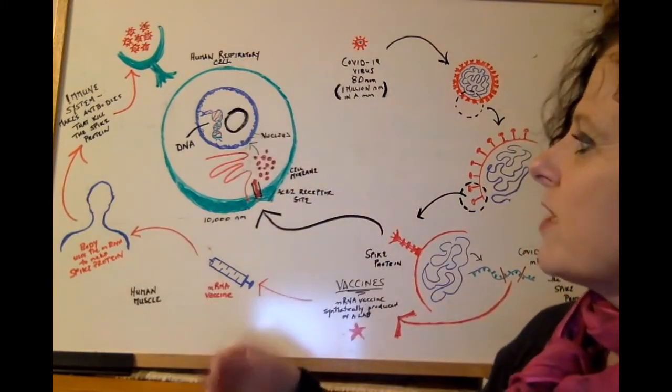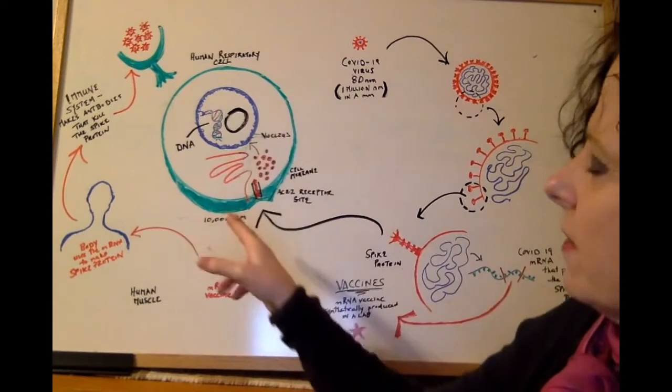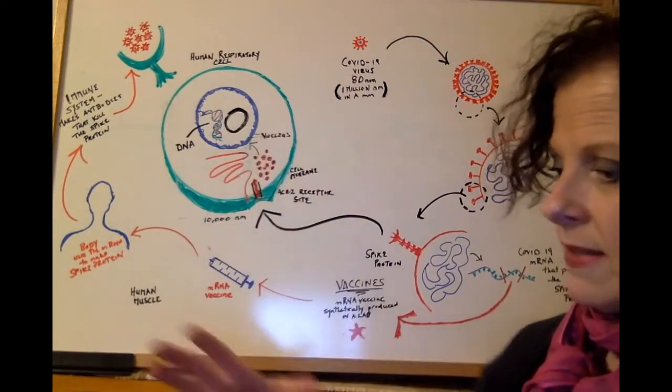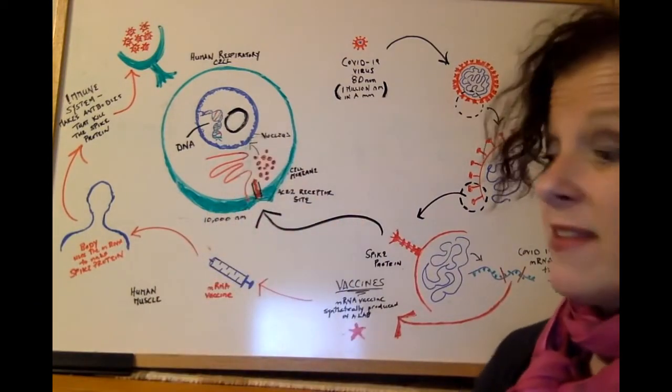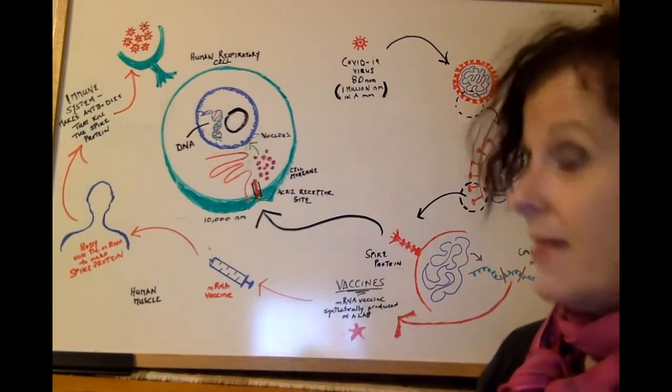A cell has some basic structures. It has, in green here, a cell membrane. And the membrane allows the cell to stay intact and allows for everything that's going on in the cell to stay in the cell. The cell has cytoplasm or fluid in it.